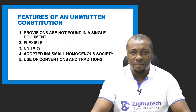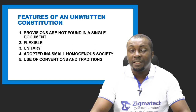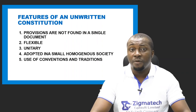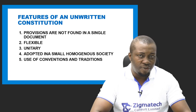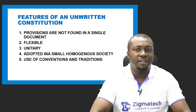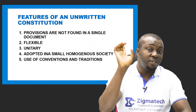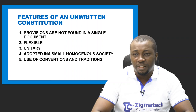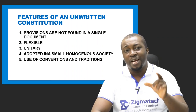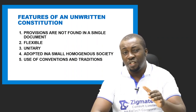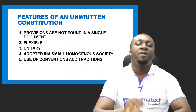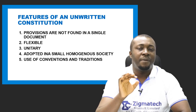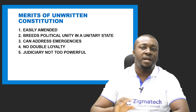Features of an unwritten constitution: provisions are not in a single document but in different documents. It is flexible — easy to amend, not requiring strict or difficult procedures. It is unitary in nature, concentrating governmental powers in one single authority. It is adopted in small, homogeneous states. Customs, traditions, and conventions are usually applied in this constitution.